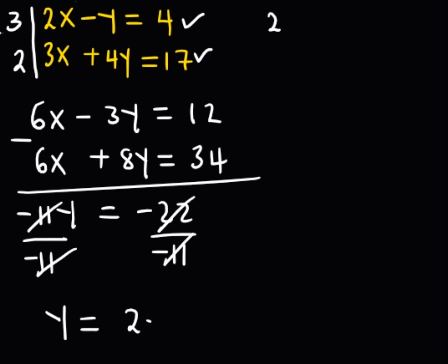I'm going to have 2x minus 2, everything is equal to 4. So I'm going to begin by taking 2 to the right hand side. Implying that I have 2x minus 2 plus 2, everything is equal to 4 plus 2.